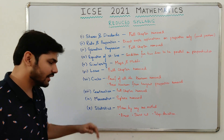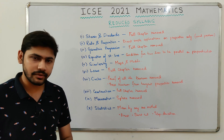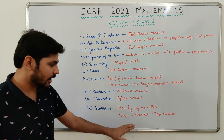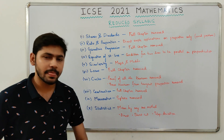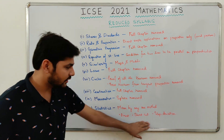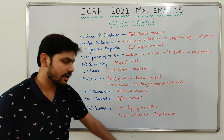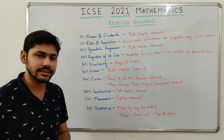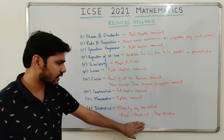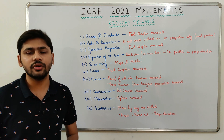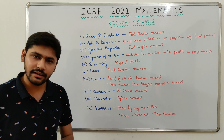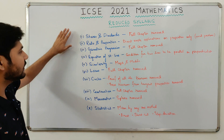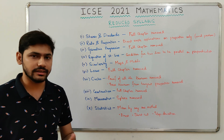Finally, Statistics — that is, Measures of Central Tendency. There is only a slight change: mean by any one method out of Direct, Shortcut, or Step Deviation. Earlier you had to know all three methods, but for 2021 you only need to know one. That said, it is better to know all three methods.